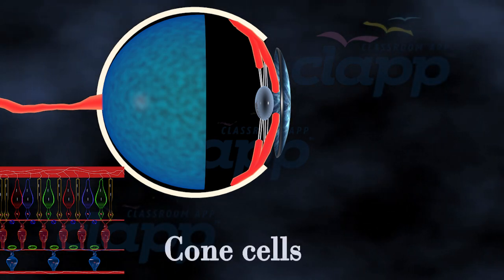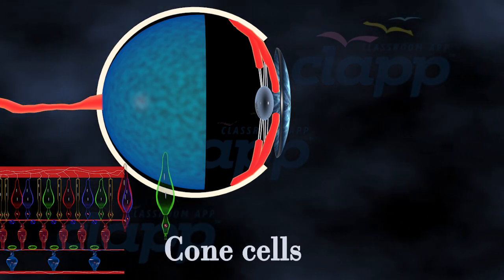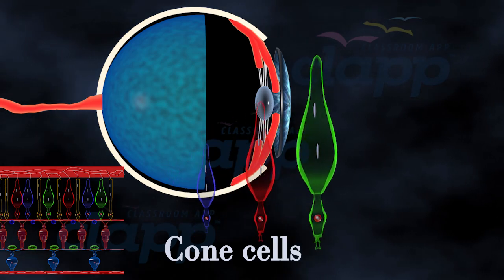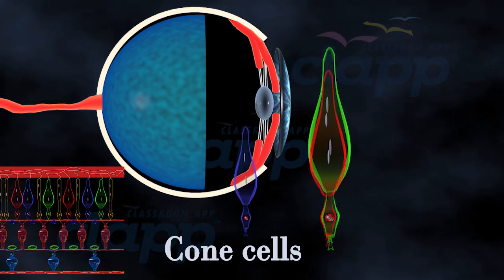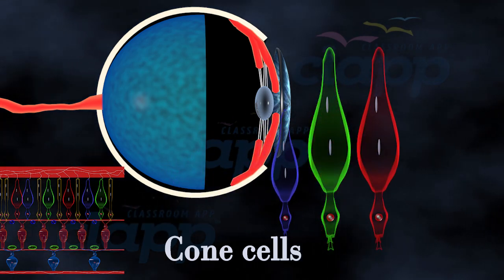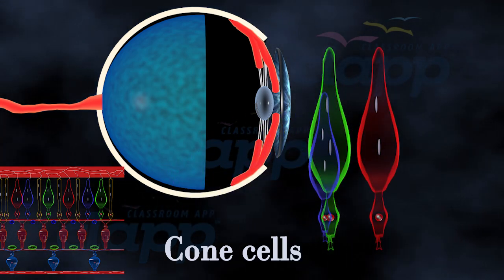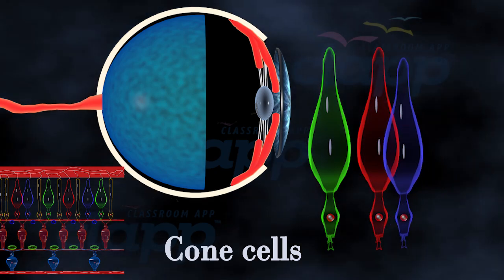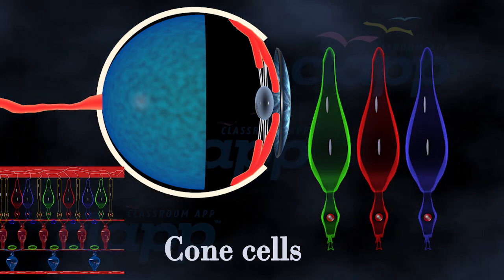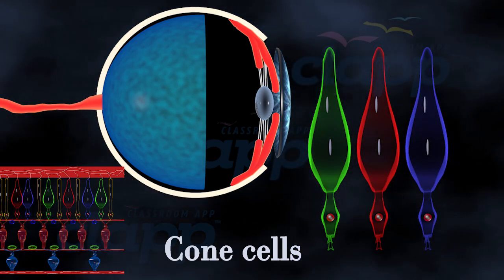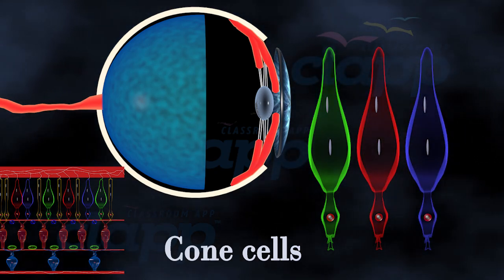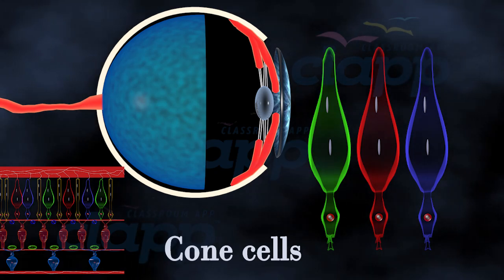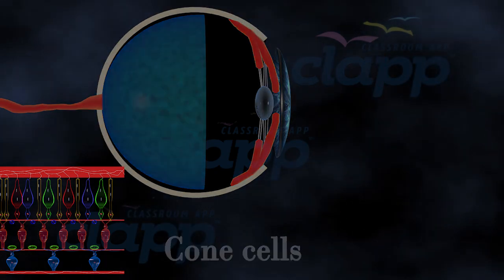Cones and color vision. Cones, on the other hand, are responsible for our color vision. We have three types of cones, each sensitive to different wavelengths of light. They work together to allow us to see a wide spectrum of colors.